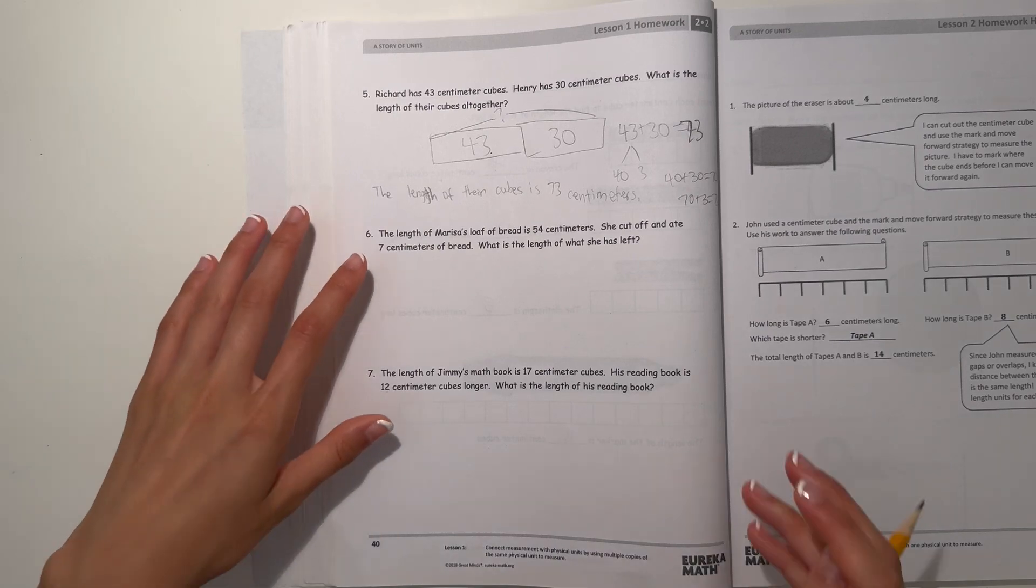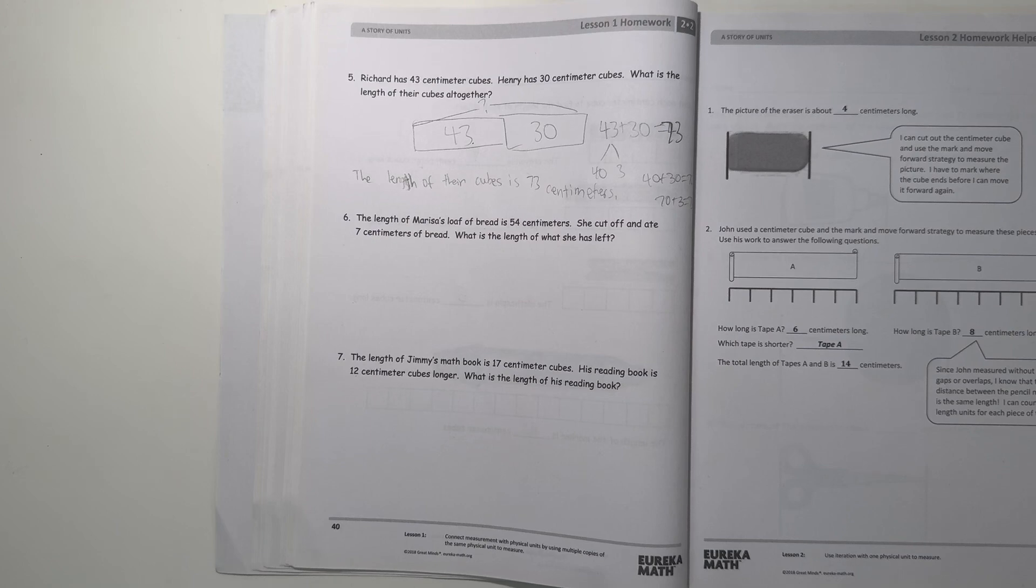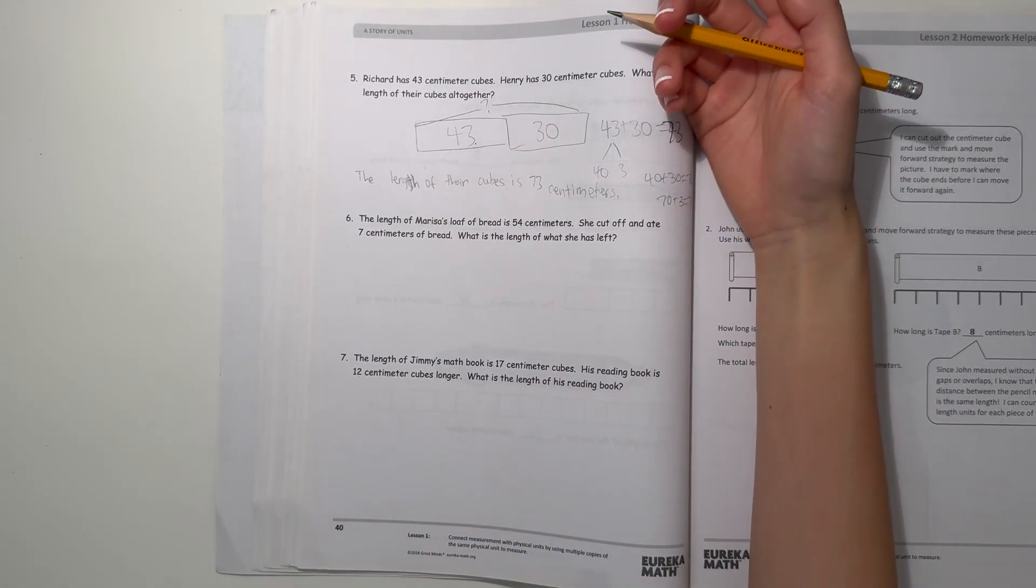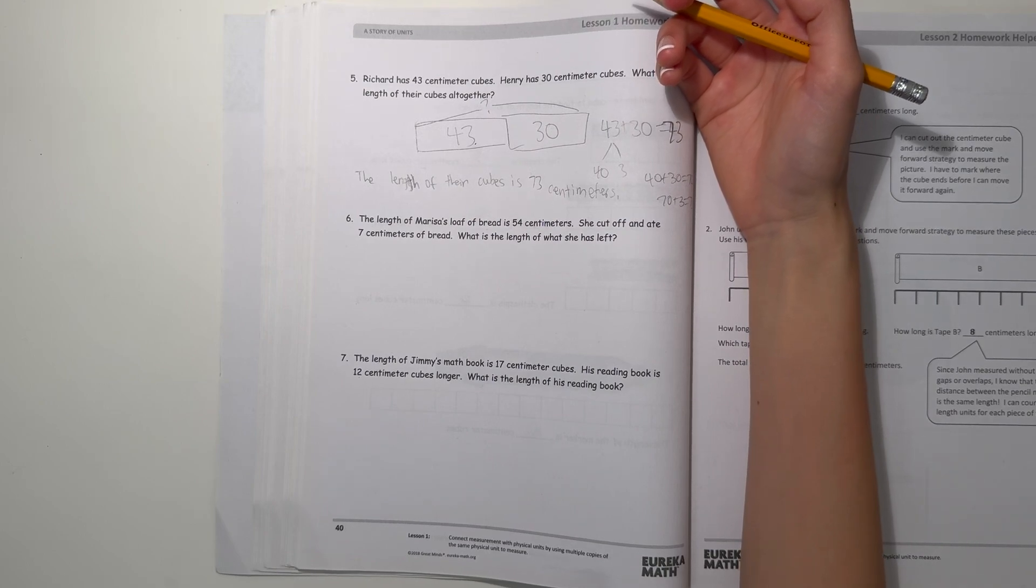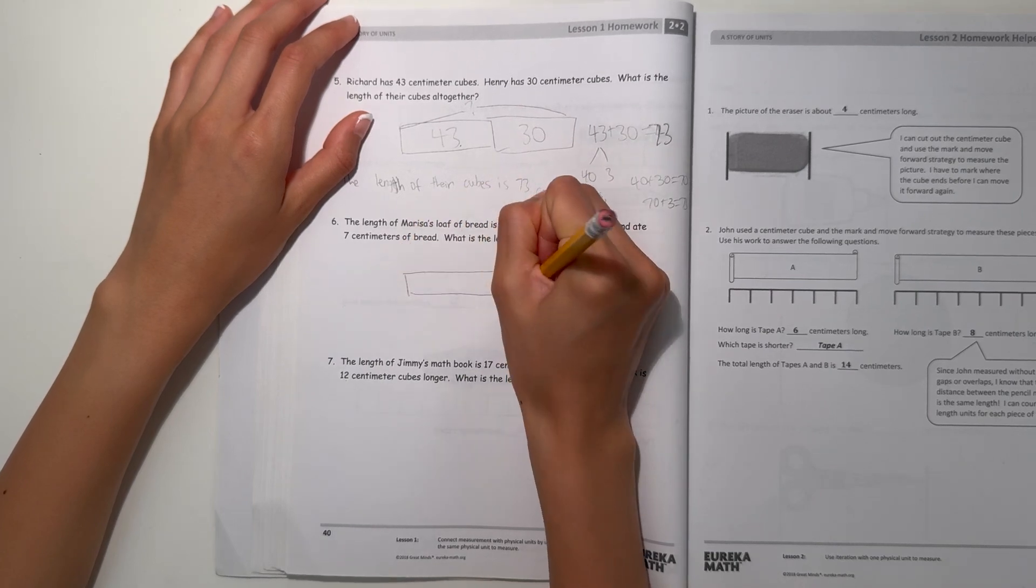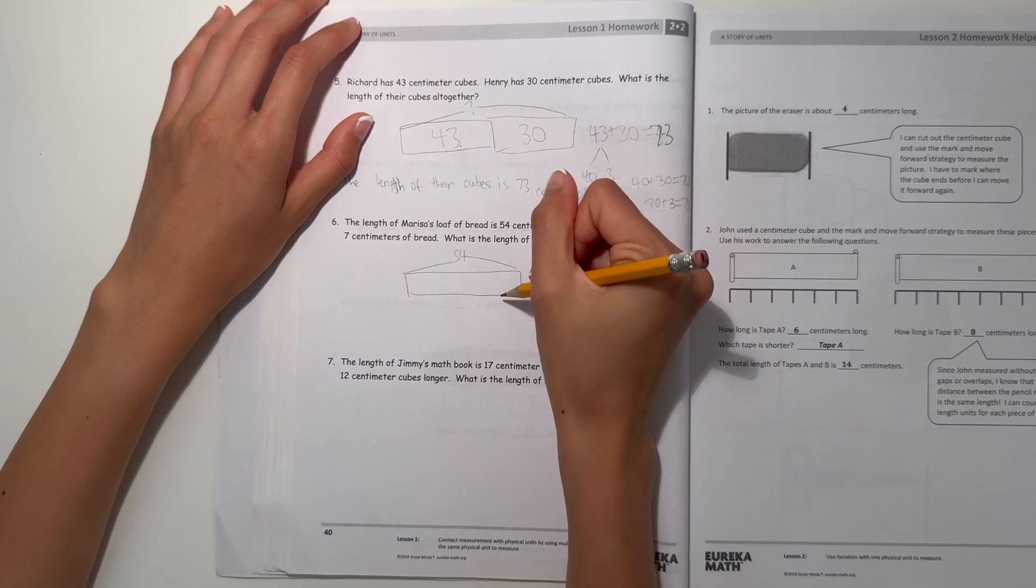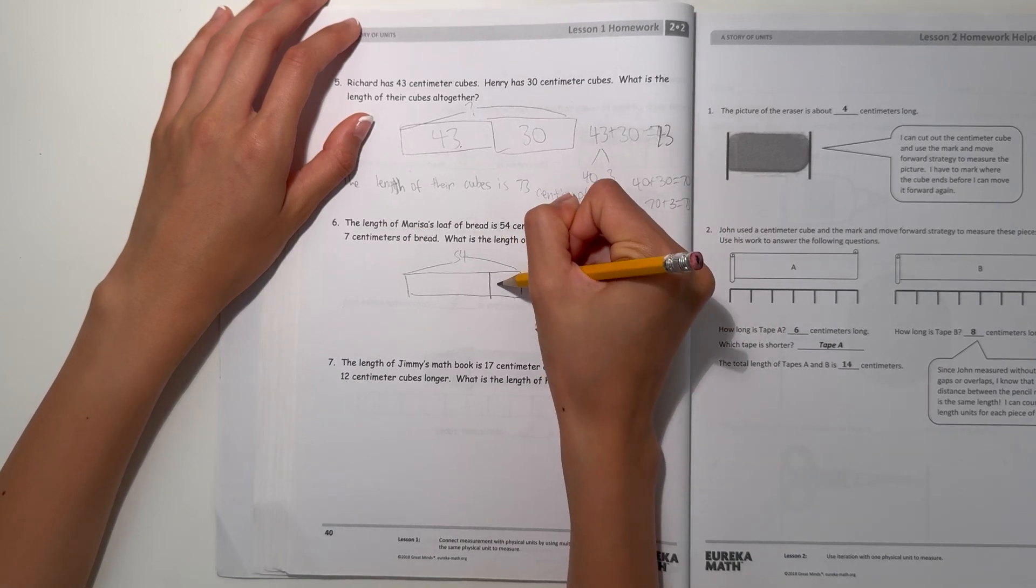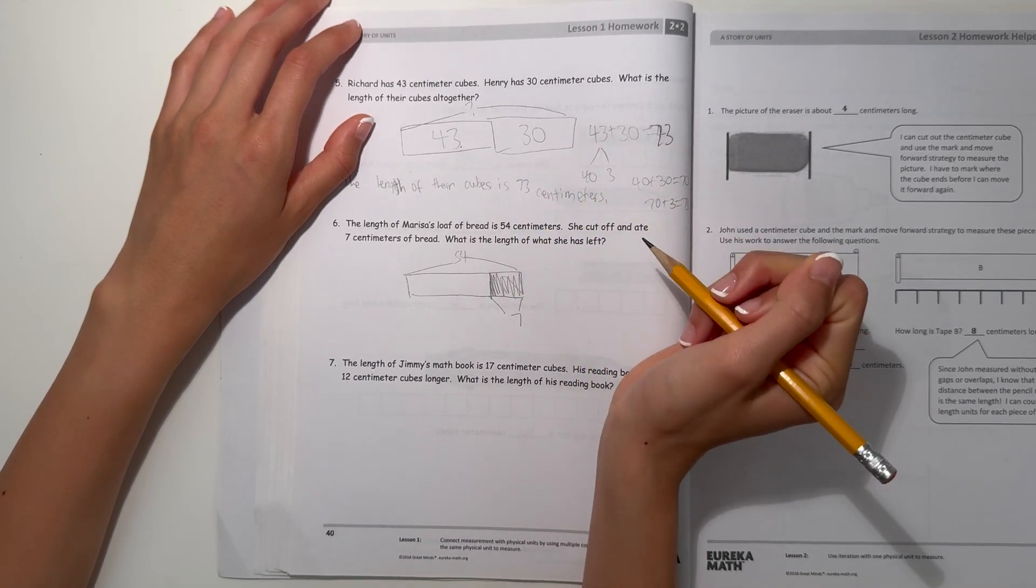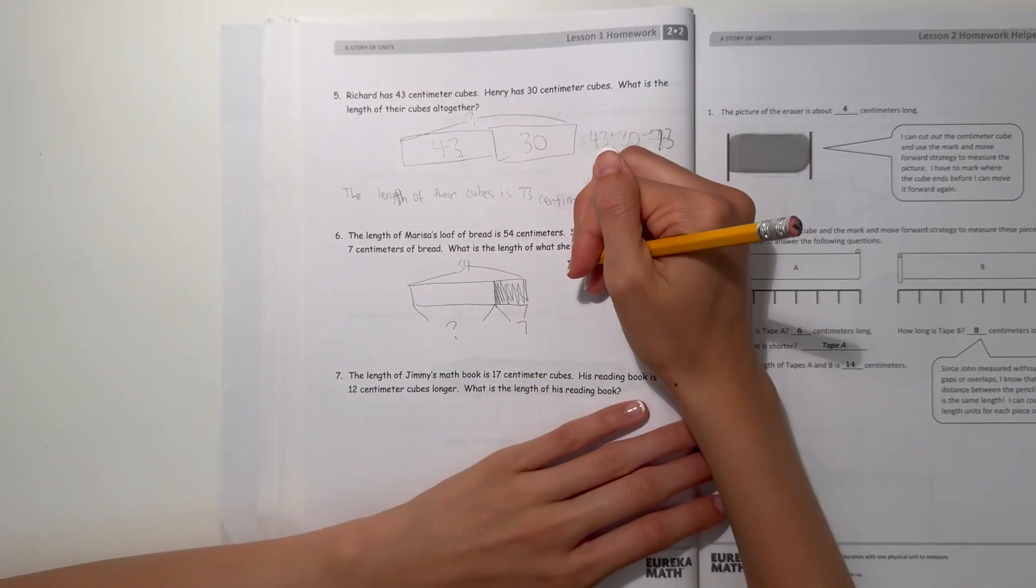Number 6: The length of Marissa's loaf of bread is 54 centimeters. She cut off and ate 7 centimeters. What is the length of what she has left? Marissa has 54, and she took away 7 centimeters. How many does she have left? This is what we're trying to figure out.